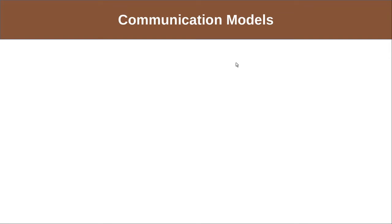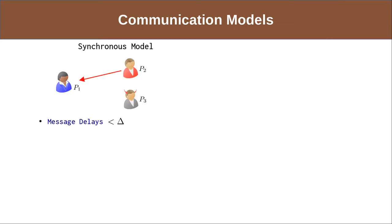Secure multi-party computation protocols can be classified based on their communication model. In the synchronous model, there is a globally known upper bound on the message delays, and the parties have access to synchronized clocks. As a result, the computation can proceed in rounds, where at the end of each round, if a party does not receive an anticipated message from another party, it can simply deem it as corrupt.